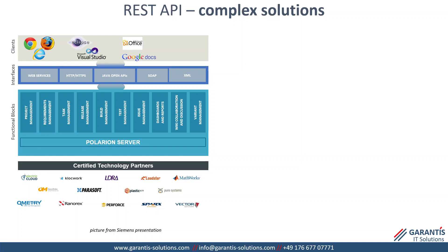For a more complex solution, REST API offers much more possibilities described in greater detail. Let's look at what we already have without REST API. We have web services and Java Open API. They work using HTTP and HTTPS as a protocol, with XML as text data, and we can also use SOAP. There are different clients including web browsers and external software like Eclipse and Visual Studio, which connect using either Java Open API or web services to the functional blocks of Polarin.